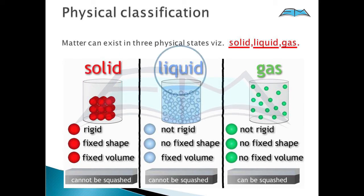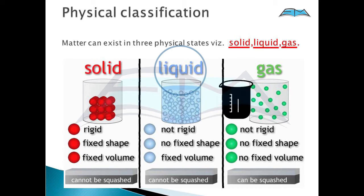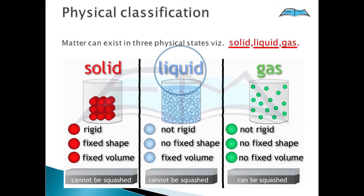Liquid is not rigid; it has no fixed shape but has a fixed volume. For example, if I put one liter of water in a jar, the volume will also be one liter. But it acquires the shape of the jar. So its shape is not fixed, but it has a fixed volume.